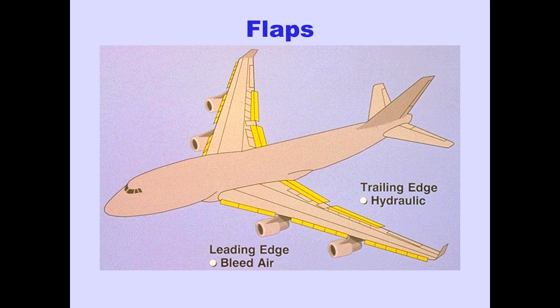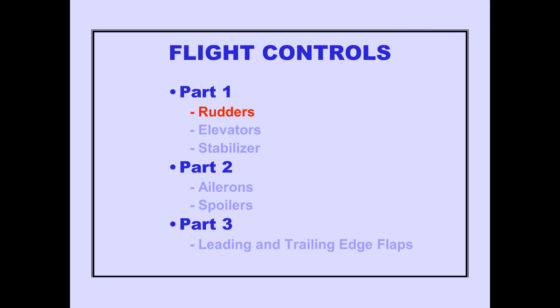The leading and trailing edge flaps provide increased lift and decreased stall speed for takeoff and landing. The leading edge flaps are powered by bleed air, while the trailing edge flaps are hydraulically powered. Let's now look at the flight controls in more detail, starting with the rudders.